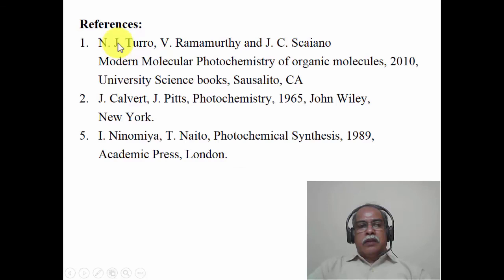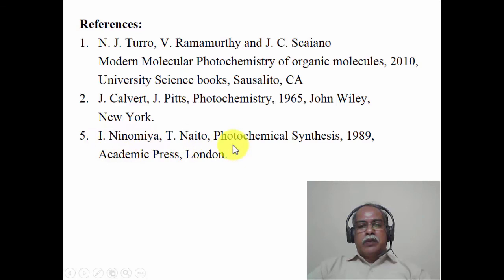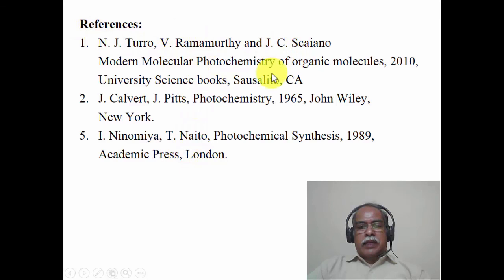The resources for these photochemistry modules include: the book by Turro, Ramamurthy, and Scaiano — 'Modern Molecular Photochemistry of Organic Molecules' — a very recent, exhaustive, and highly informative book from which many examples are taken. Calvert and Pitts is a classical photochemistry book, though it is old and out of print. Ninomiya and Naito covers photochemical synthesis for purely synthetic purposes, published in 1989. I hope you enjoyed this introductory photochemistry lecture. Thank you very much for your kind attention.